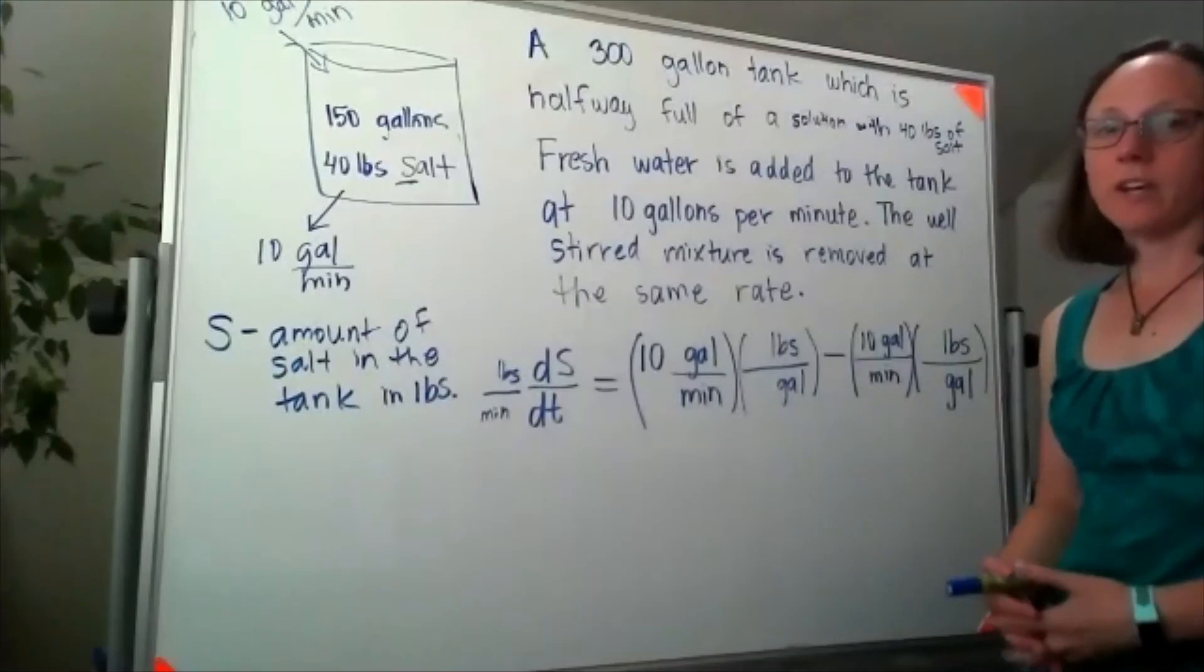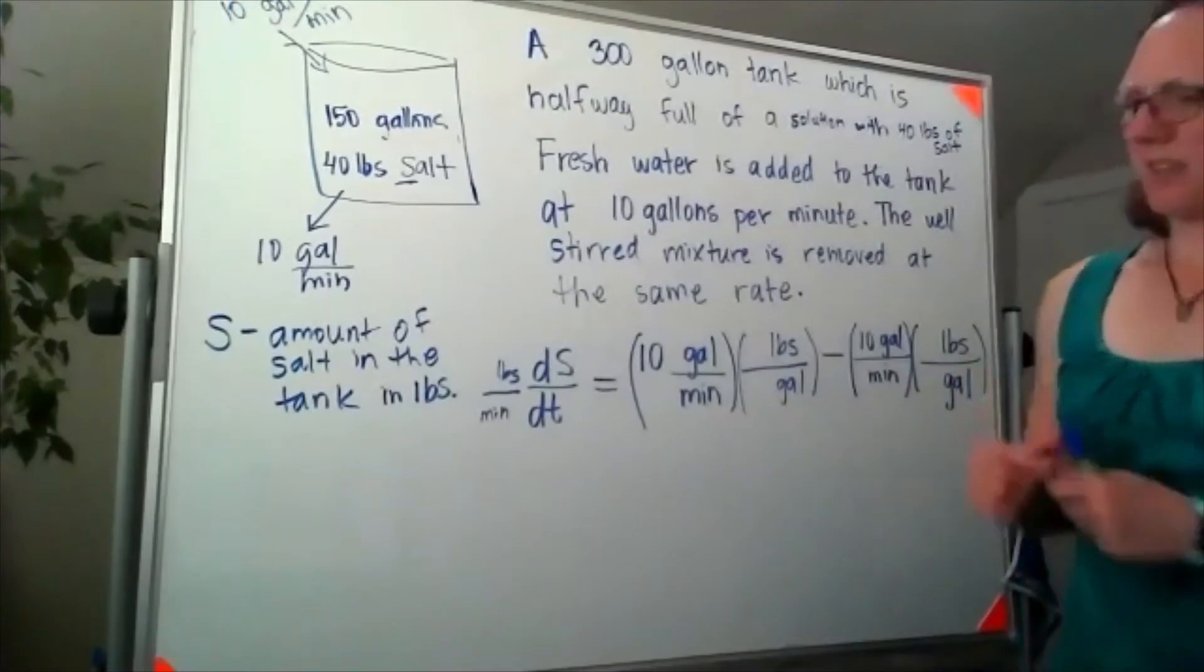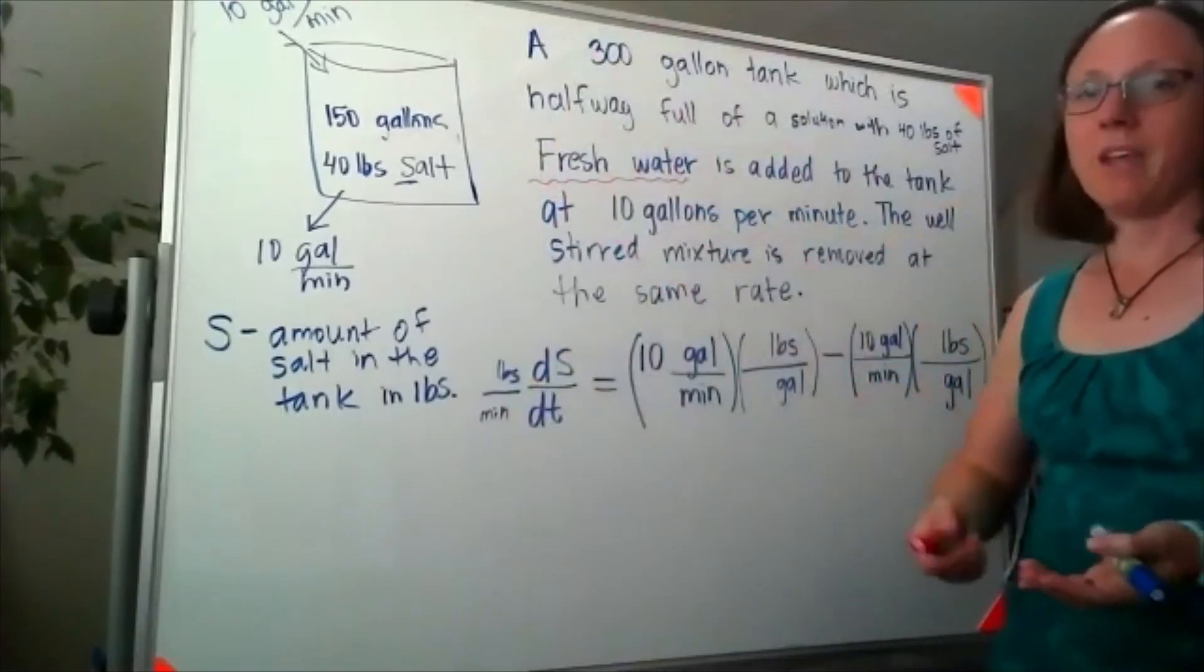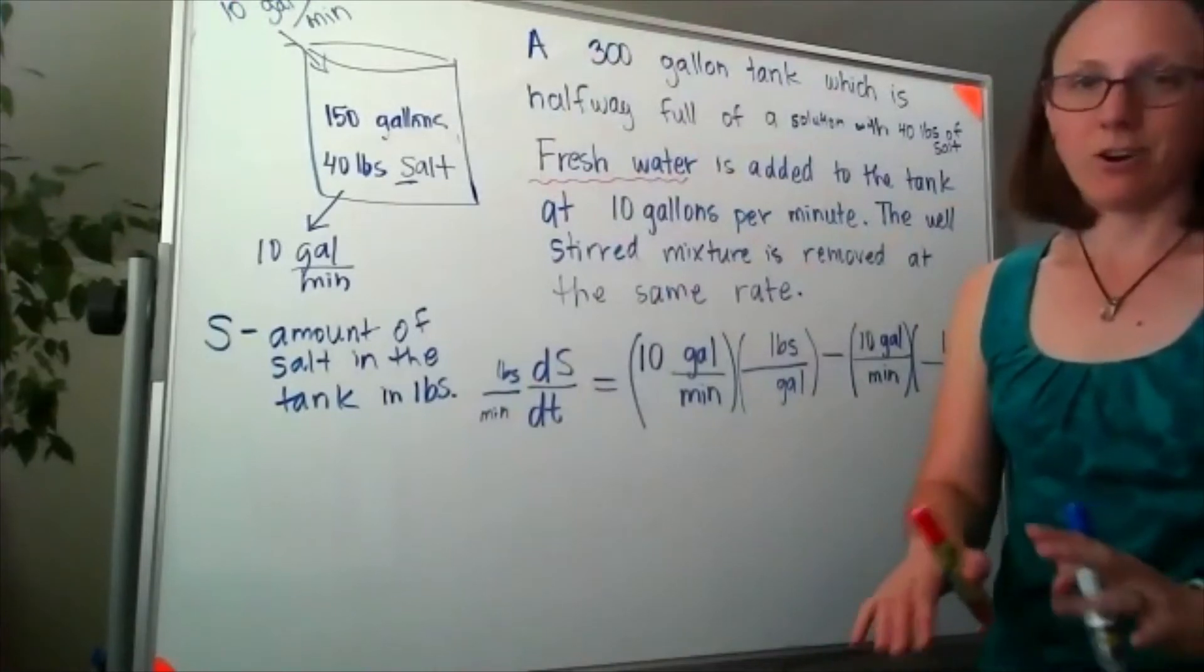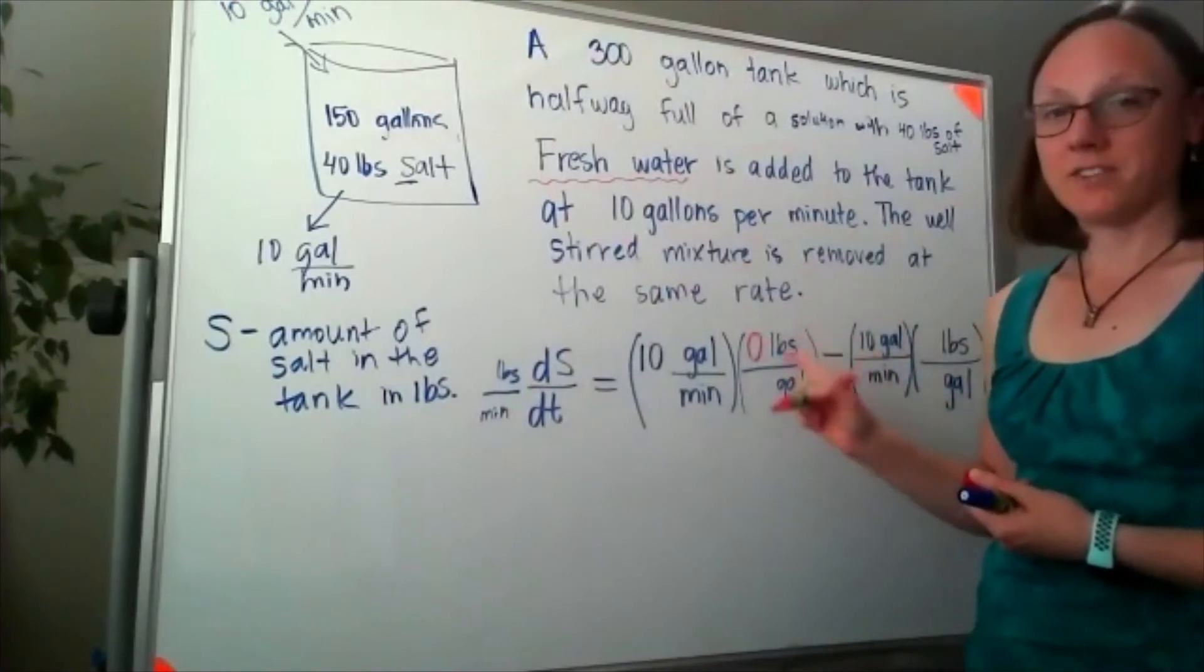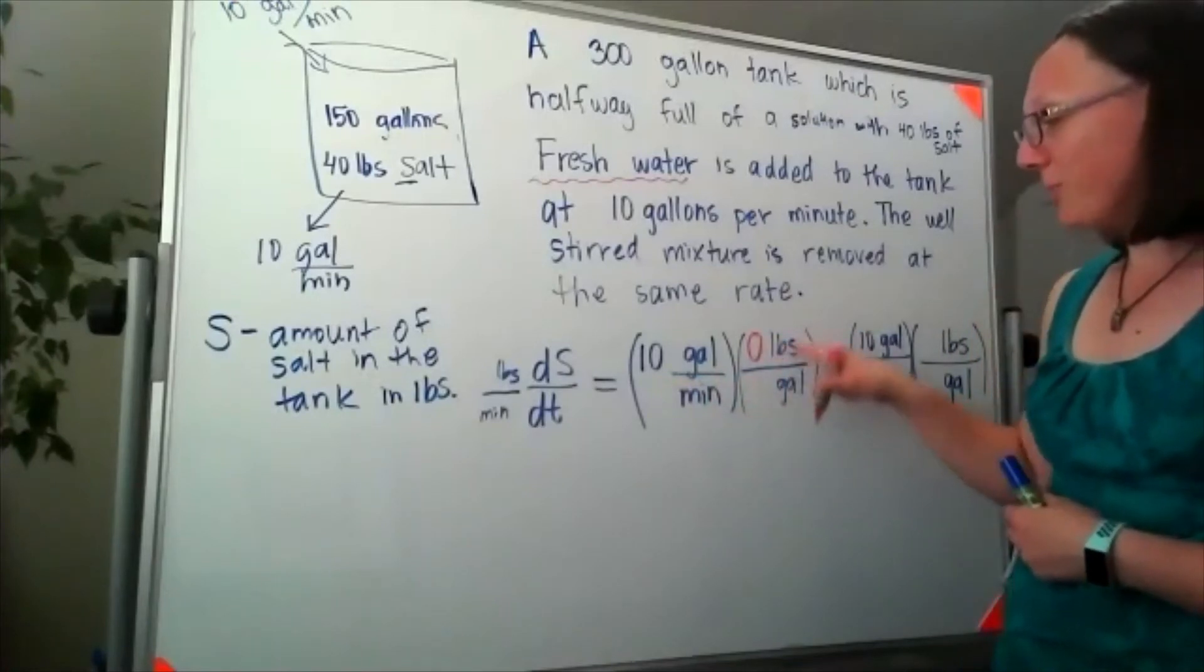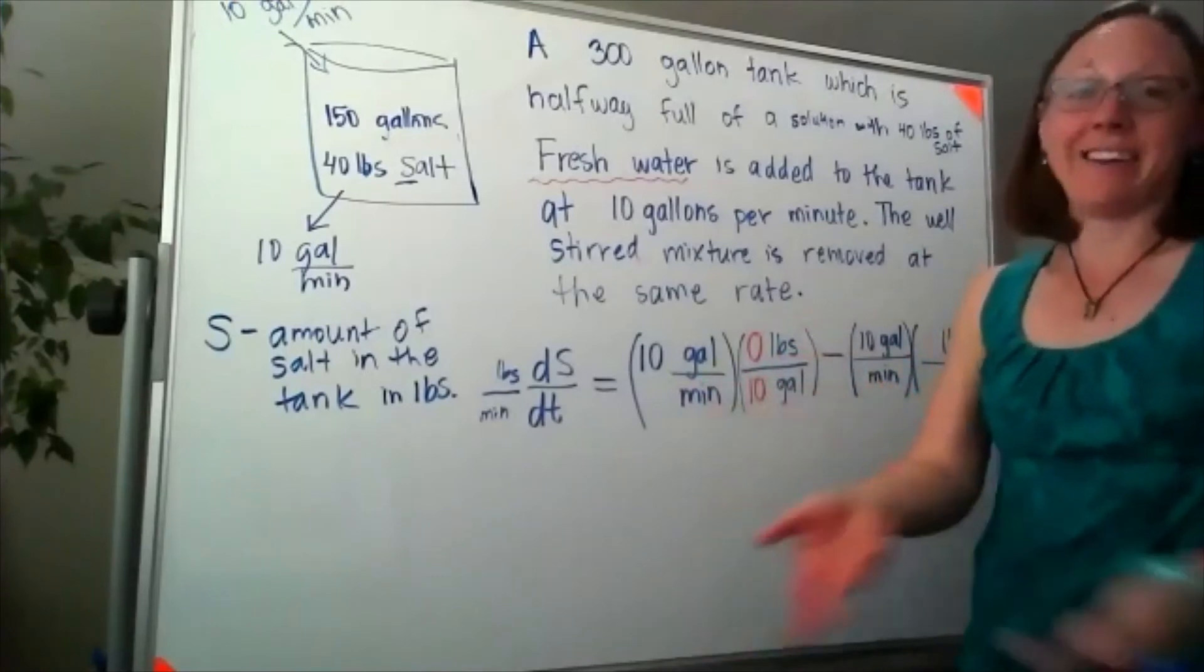Well, thinking about the units, let's start with what's coming in. What is coming in? Fresh water. Now, fresh water—how many pounds of salt should be in a gallon of fresh water? I know it's not really zero, but we're going to pretend it's zero. We would expect there to be zero pounds of salt per one gallon of fresh water, or per 10 gallons. We expect there to be zero pounds of salt in each 10-gallon dump of water.